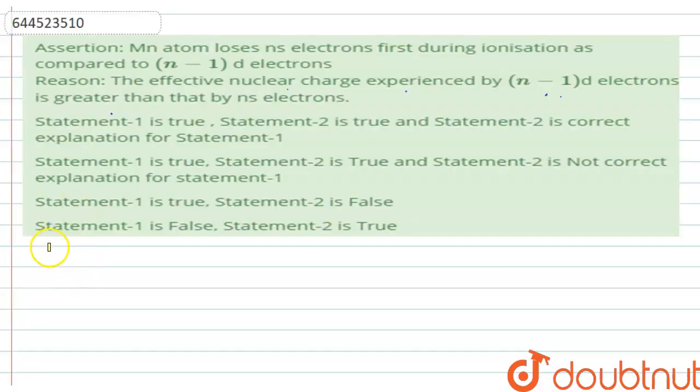Hello students, first of all let us have a look at the question here. The question is of assertion and reason. So assertion is that Mn, that is manganese atom, loses ns electron first during ionization as compared to n minus 1 d electrons. And the reason given is that the effective nuclear charge experienced by n minus 1 d electrons is greater than that by ns electrons.